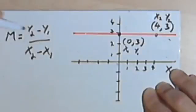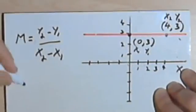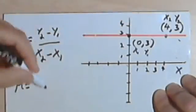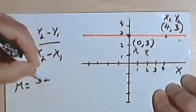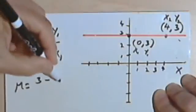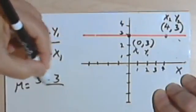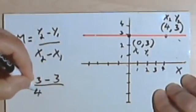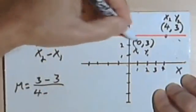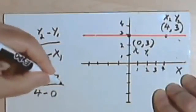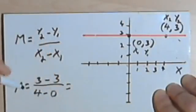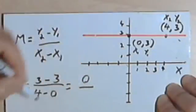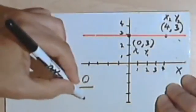And we'll use this equation to figure out the slope. So m equals, y sub 2 is 3, minus y sub 1 is 3, and then x sub 2 is 4, minus x sub 1 is 0. So 3 minus 3 is 0, and 4 minus 0 is 4.